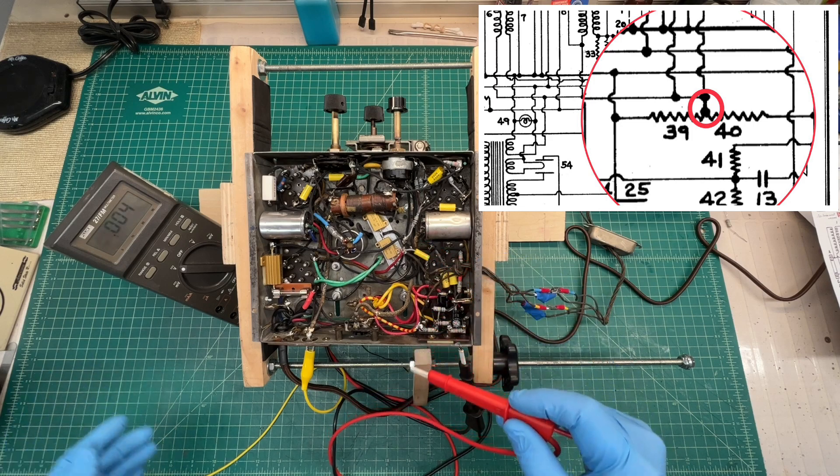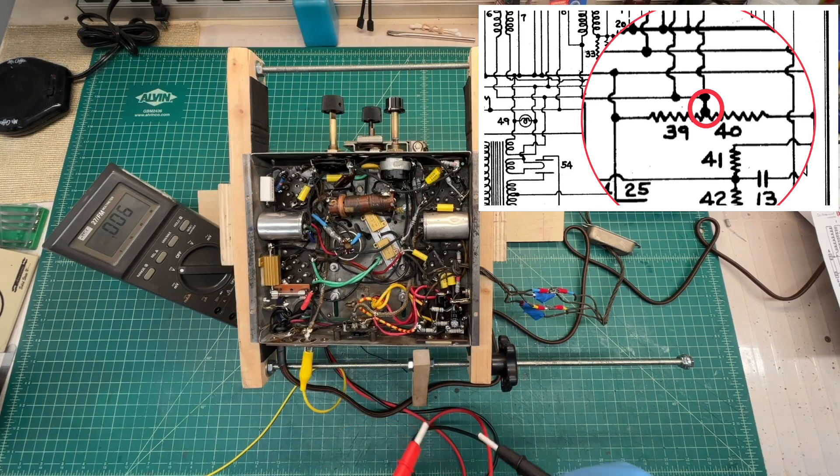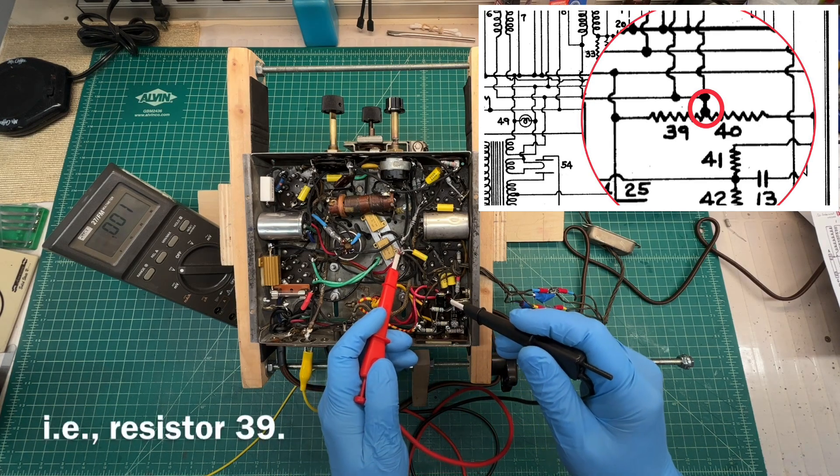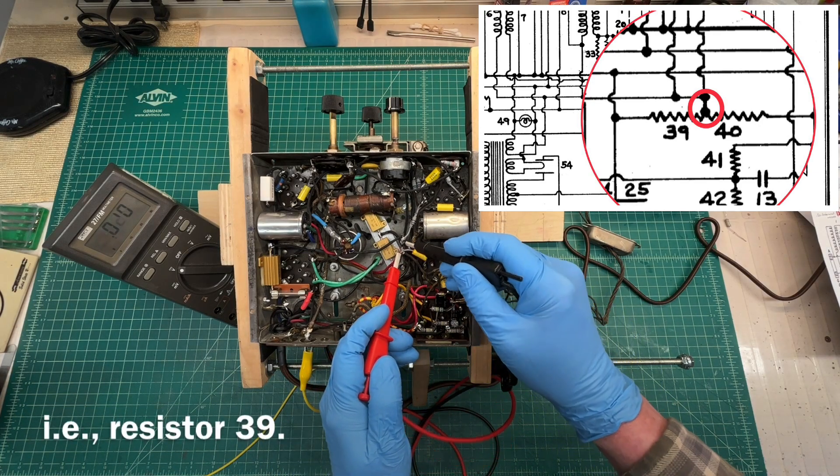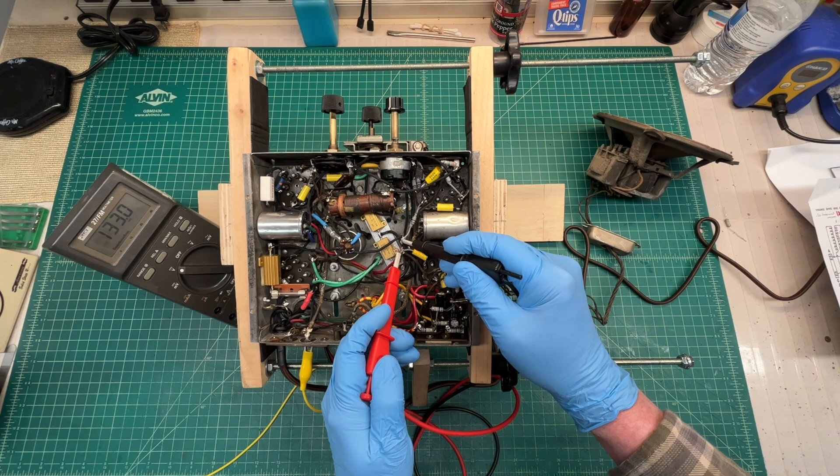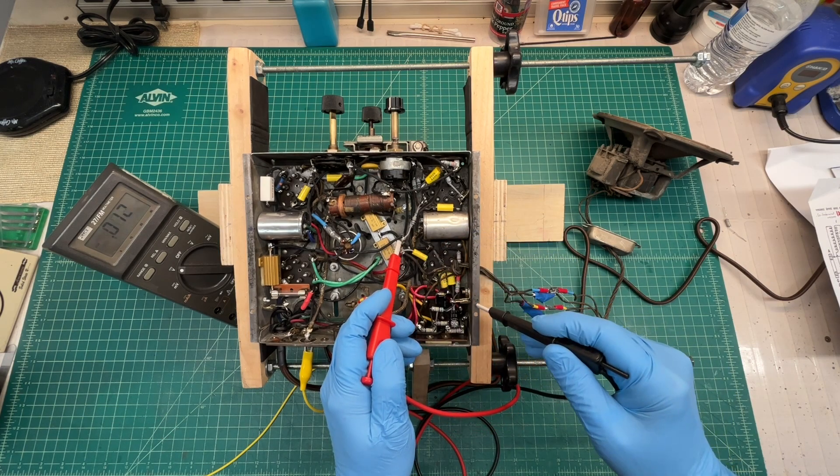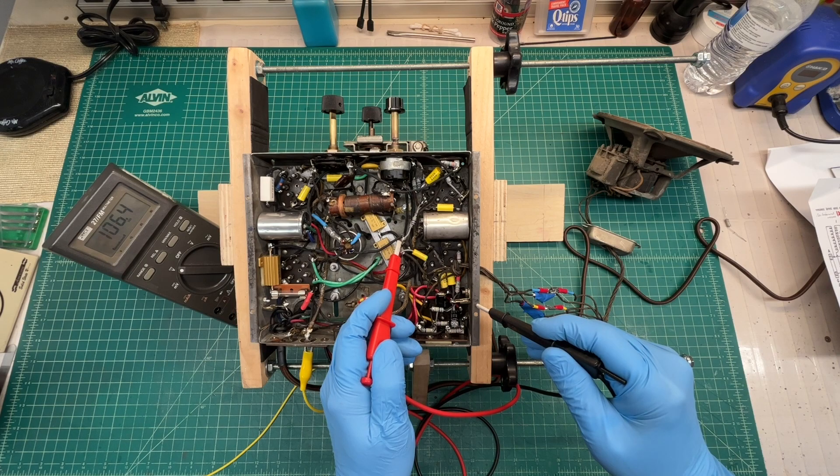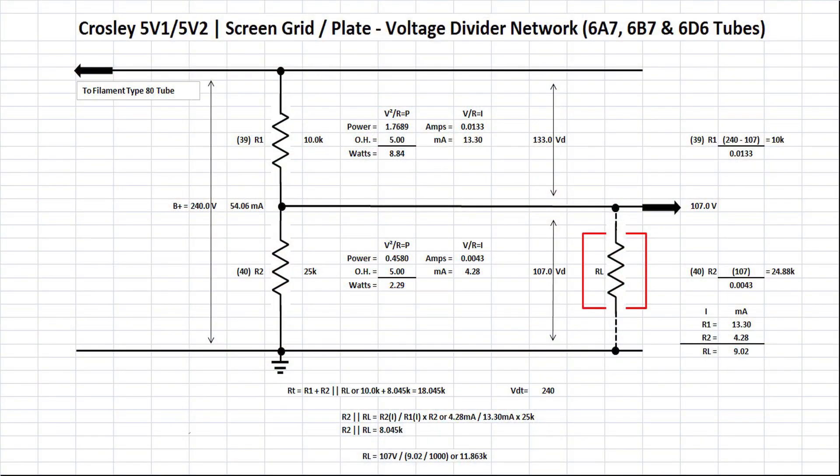Let's take a look at the voltage divider in detail. Let's look at the first section - the 10k across the resistor, 133 volt drop. Here's a look at the voltage divider in detail. You can see it's just a two section, that being at 10k and 25k. My input voltage, as I mentioned earlier, of 240 volts, the B plus supply driving around 54 milliamps of current.